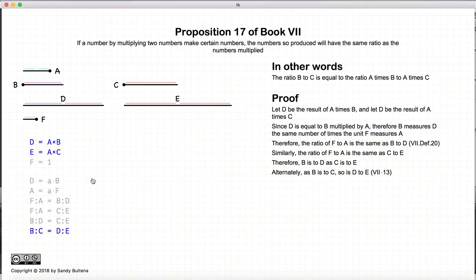And there we have shown that the ratio of B to C is equal to the ratio of D to E, when D is equal to A times B, and E is equal to A times C.